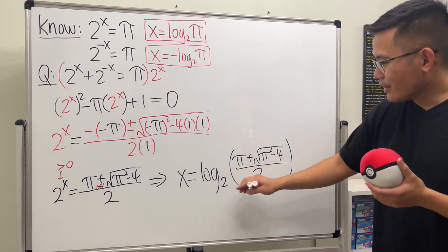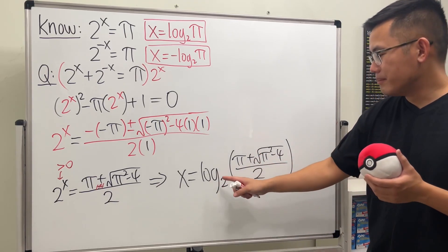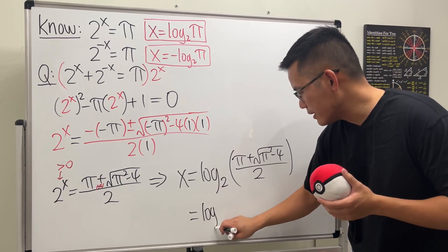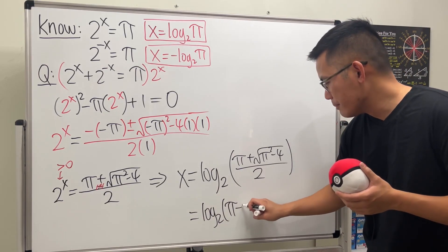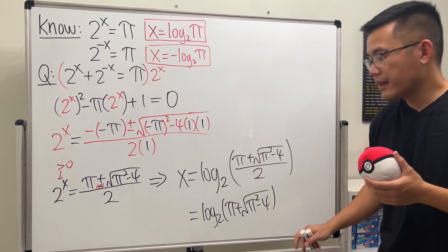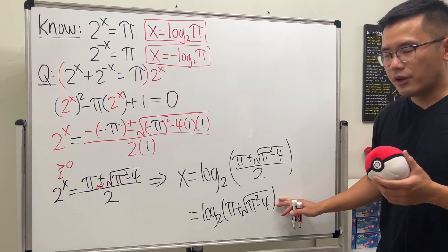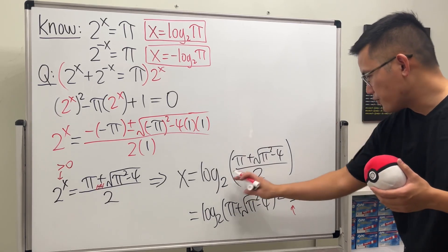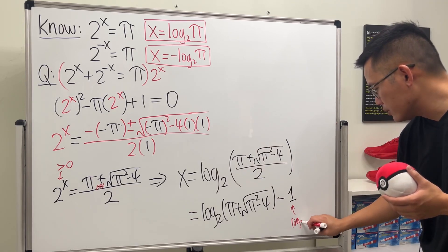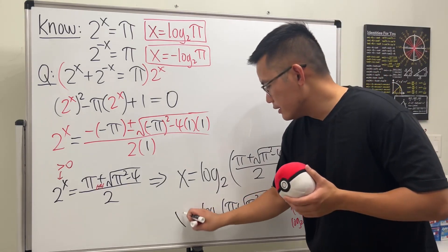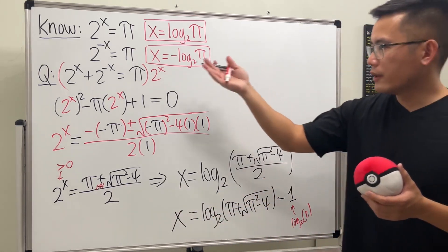Oh, you want me to break it apart? Okay, fine. So we can do log of the top and then minus log of the bottom. So this right here, I'm just going to write it as log base 2. And then we have pi plus square root of pi squared minus 4 minus log base 2 of 2, which is just minus 1. And this one comes from the second part, log base 2 of the bottom, which is the 2. So this is the real solution for that equation.